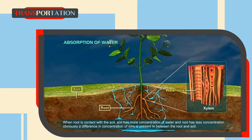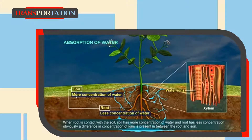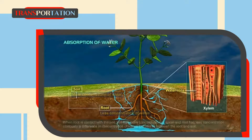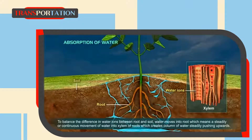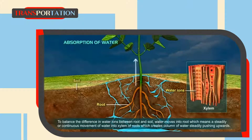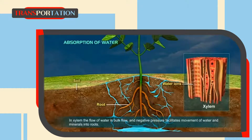When the root is in contact with the soil, the soil has a higher concentration of water and the root has a lower concentration. A difference in concentration of ions is present between the roots and soil. To balance this difference, water moves into the roots, creating a steady continuous movement of water into the xylem of roots, which creates a column of water steadily pushing upwards. In xylem, the flow of water is bulk flow, and negative pressure facilitates movement of water and minerals into roots.